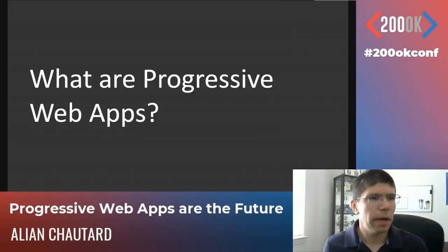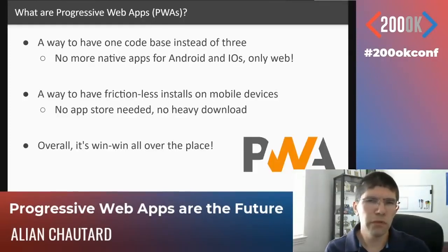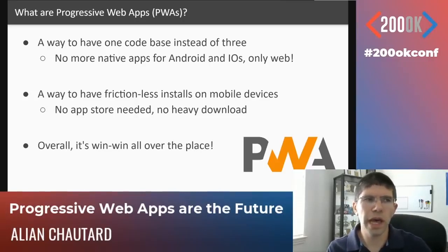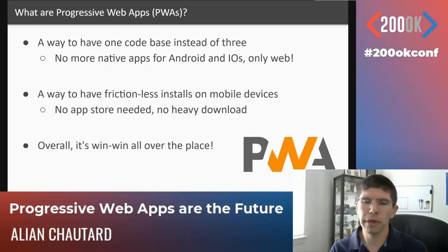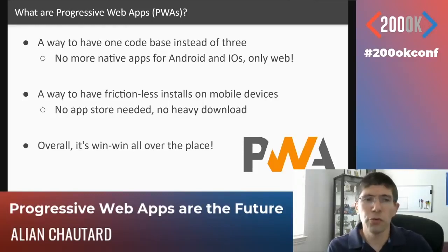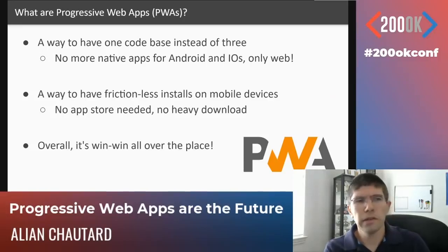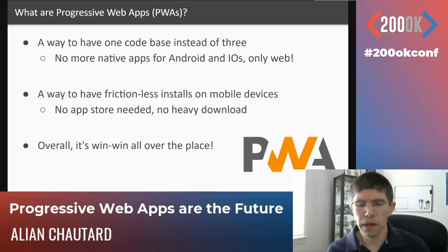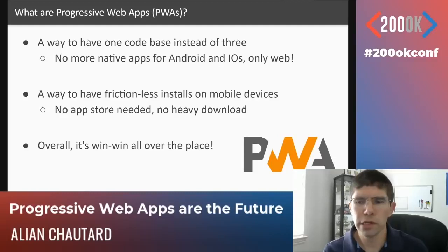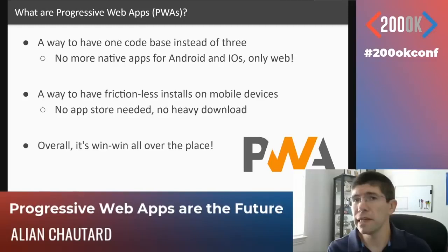So what is a progressive web app? When we build a progressive web app, what we're doing is working on a way to have one code base instead of three. The idea is you build a web app, and that web app is going to work for the web in a browser and also be what you use on Android and on iOS for mobile devices.